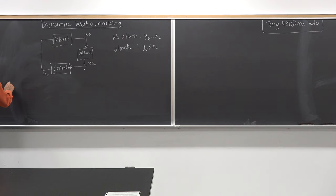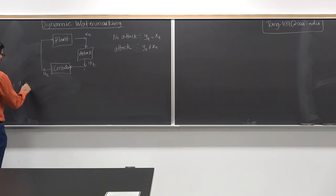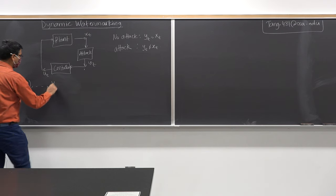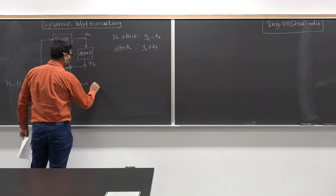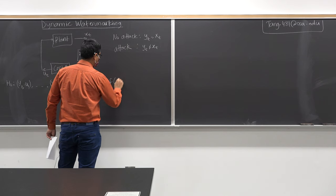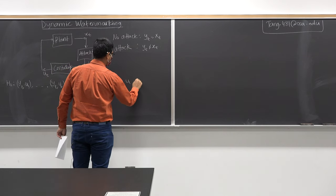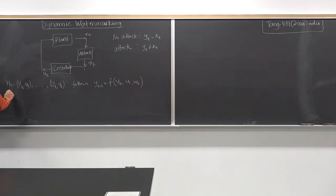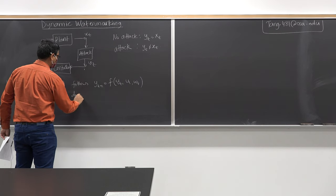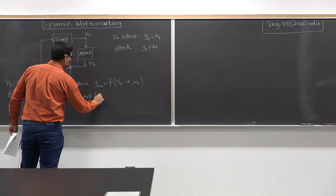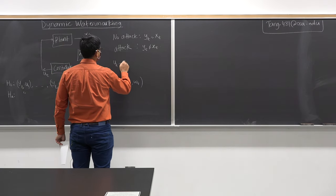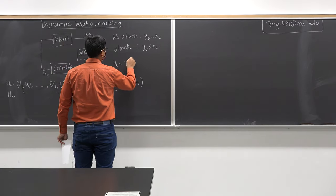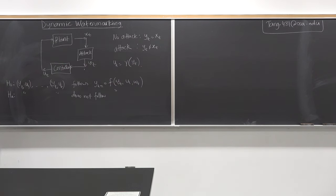The hypothesis test we set up in the previous class: the null hypothesis H1 is that y1, u1, ..., y_t follows the dynamics y_{t+1} = f(y_t, u_t, w_t), and u_t equals gamma of y_t where gamma is the policy. The alternate hypothesis is that the sequence does not follow these dynamics.